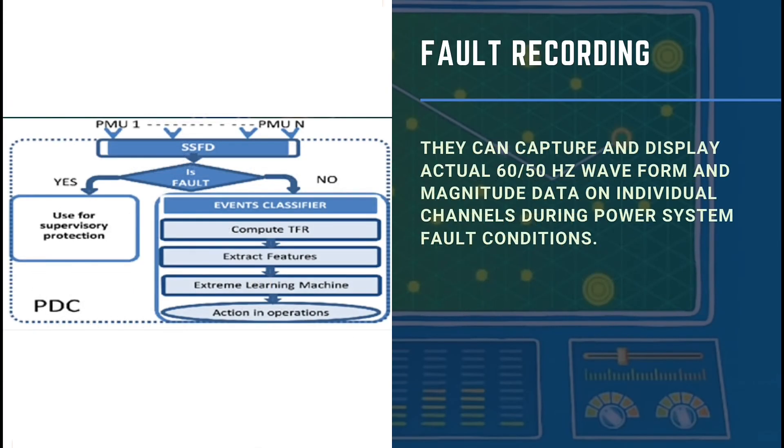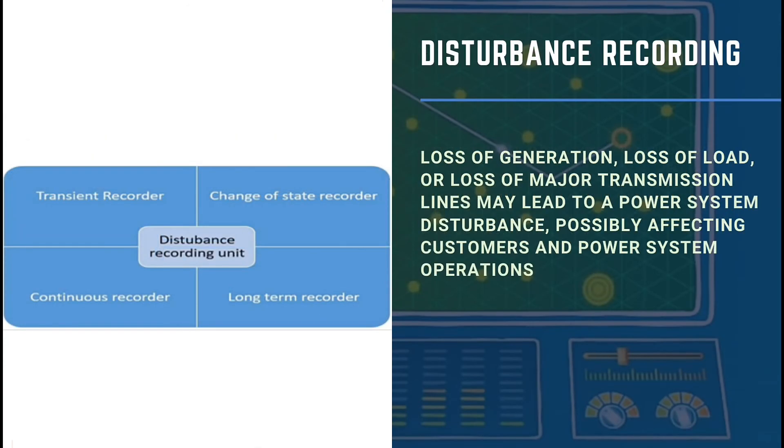Fault recording: PMUs can capture and display actual 60/50 hertz waveform and magnitude data on individual channels during power system fault conditions. Disturbance recording: Loss of generation, loss of load, or loss of major transmission lines may lead to a power system disturbance, possibly affecting customers and power system operations.